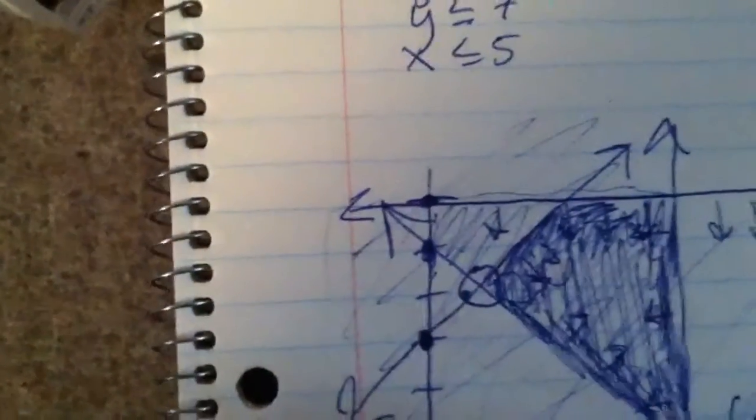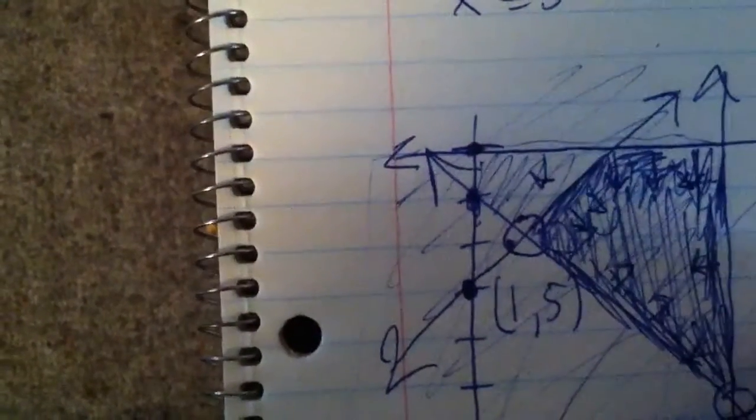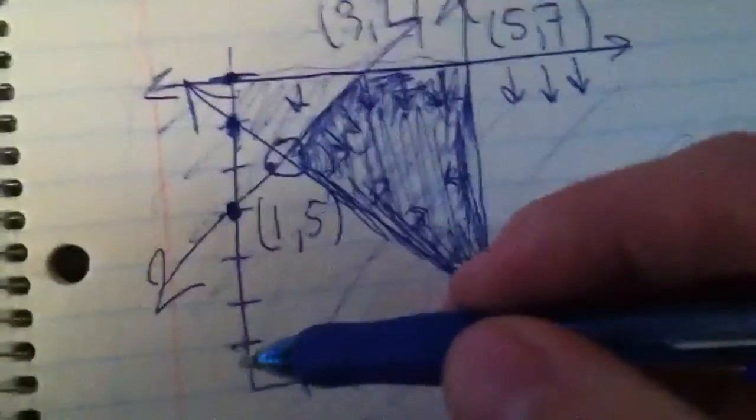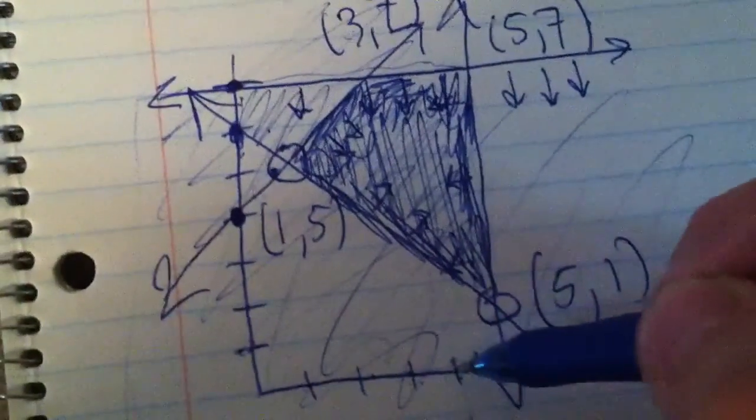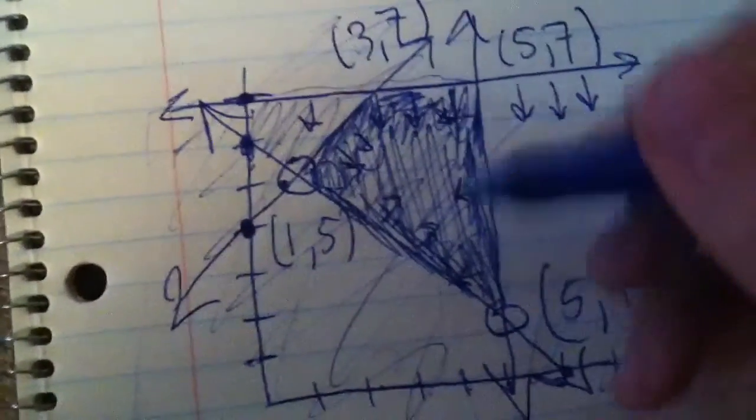This one, it should be 1, 1, 2, 3, 4, 5. This one, 1, 2, 3. This one should be 3 and 7. This one should be 5 and 7. So I'm just counting the boxes because I did my graph. You know, considering I was doing this while holding my iPhone, I did this graph actually pretty well.